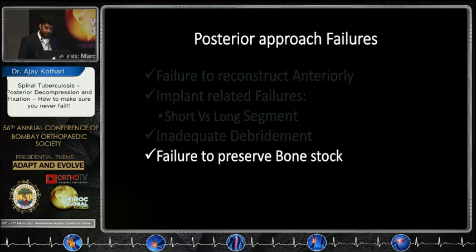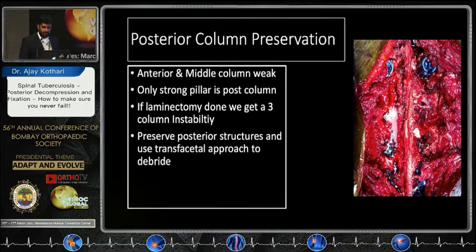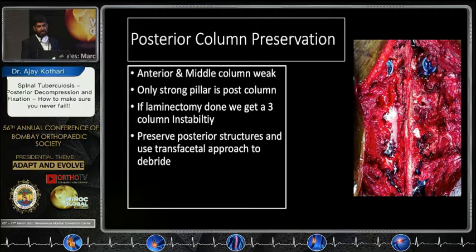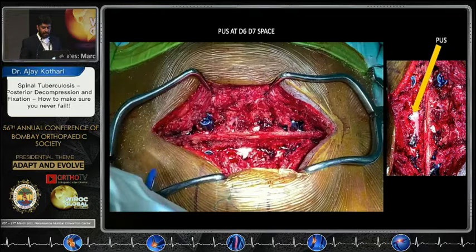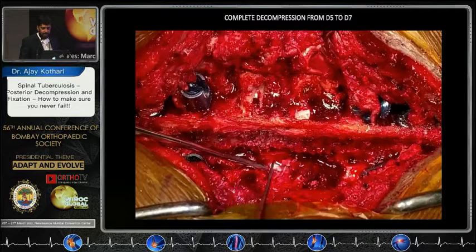Failure to preserve bone stock is also critical. During this type of posterior clearance, it is important to keep the midline intact, preserving the upper and opposite-side facets. We have been fortunate not to have failures so far with this approach. As another example here, a lot of pus came out but complete stability of the spine was maintained. Laminectomy alone is now history for us.